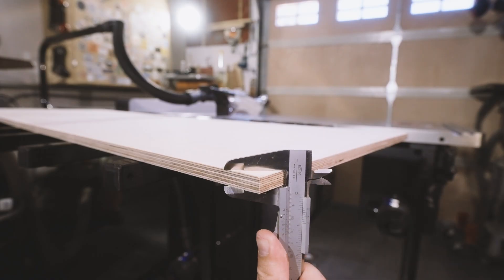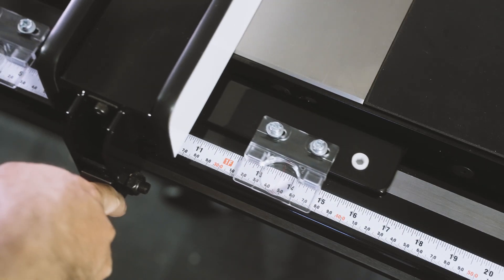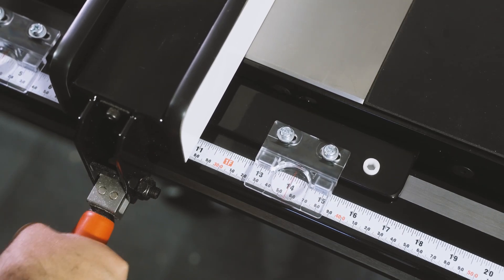For most of this build I'll be using half inch Russian birch plywood, and I'll start by cutting 14 inches off the end of my sheet of plywood.